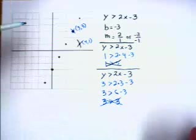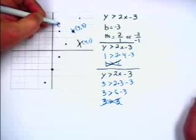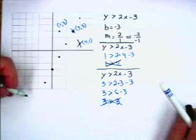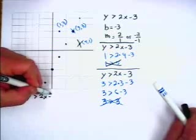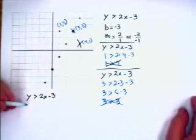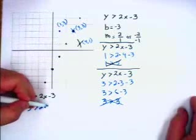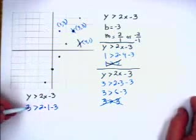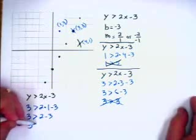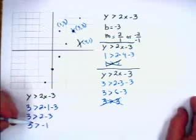So we're going to try a point above the line — how about 1 comma 3? Remember the inequality is y is greater than 2x minus 3. In place of y I put 3: 3 is greater than 2 times 1 minus 3. Solving this, that would be 3 is greater than 2 minus 3, or 3 is greater than negative 1. That's true.